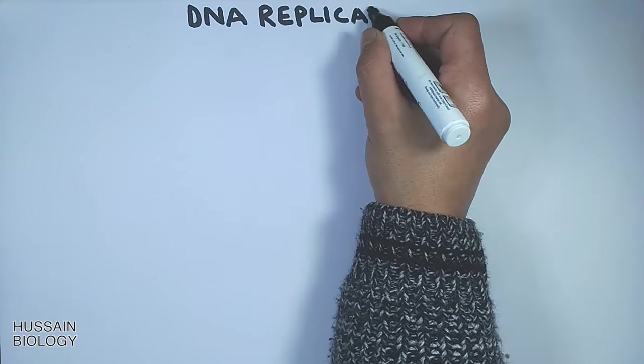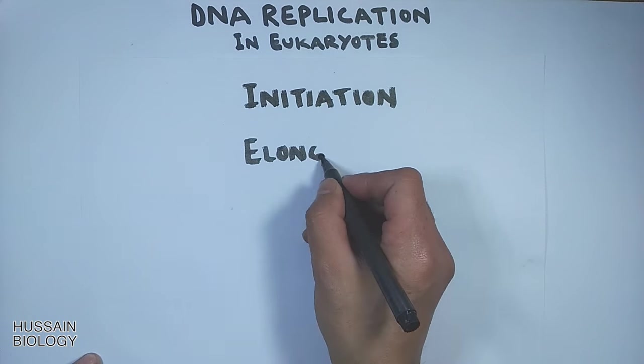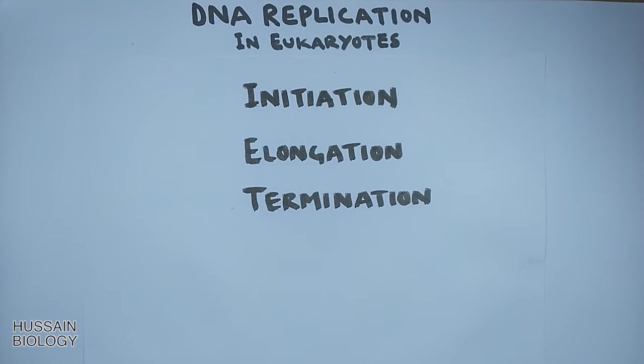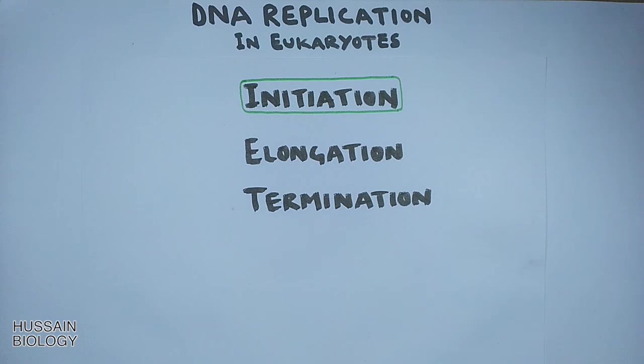In the series of videos we have been discussing prokaryotic DNA replication. Now from here we'll be discussing DNA replication in eukaryotes. The replication process proceeds in three major steps: the initiation, the elongation, and the termination. In this video we'll have a detailed look on the initiation of DNA replication in eukaryotes.